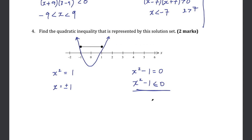So the final answer is x² - 1 ≤ 0 as one possibility. Can you find another possible solution? Let me know in the comments. If you want the questions from this video, I'll leave a PDF linked in the description as well as further practice problems to help with your revision of quadratic inequalities. Thanks for watching, see you in the next one.